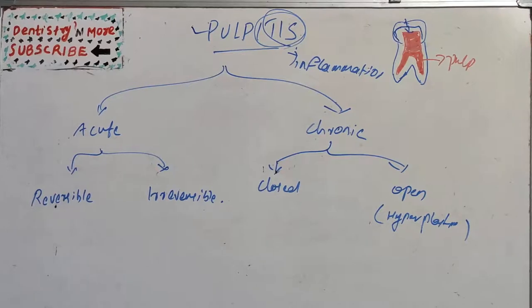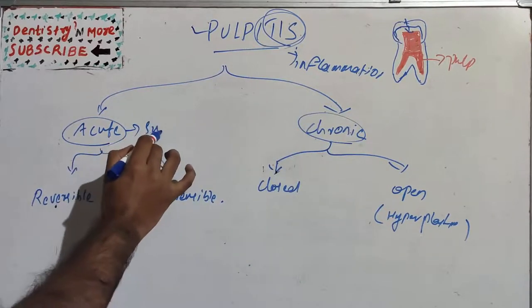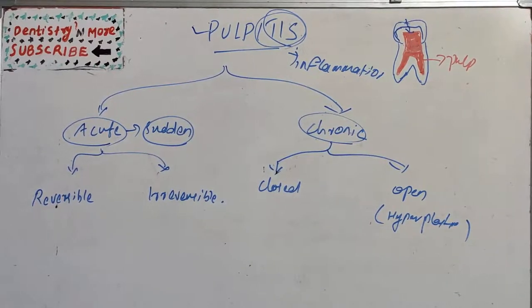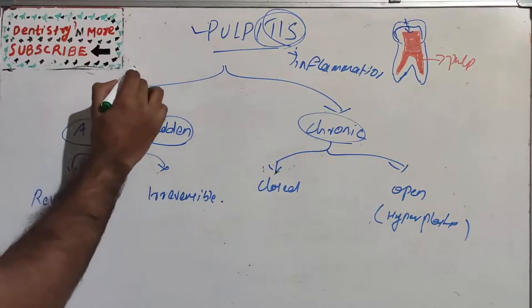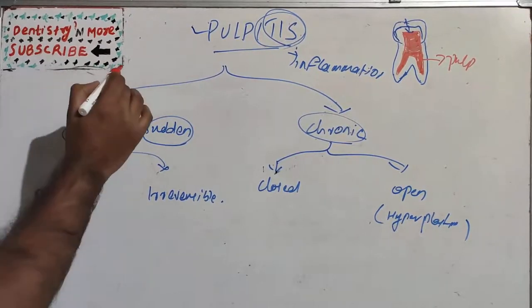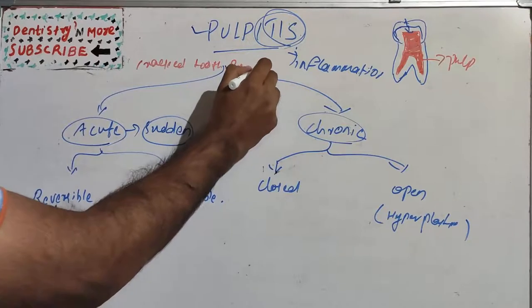Inflammation of the pulp can be two types: acute and chronic. Acute means sudden onset and chronic develops over a period of time. The etiology — the most common cause is dental caries, followed by traumatic exposure, fracture of the crown, thermal changes, chemical irritation, and even cracked tooth syndrome. Any of these could be the reason for pulpitis.